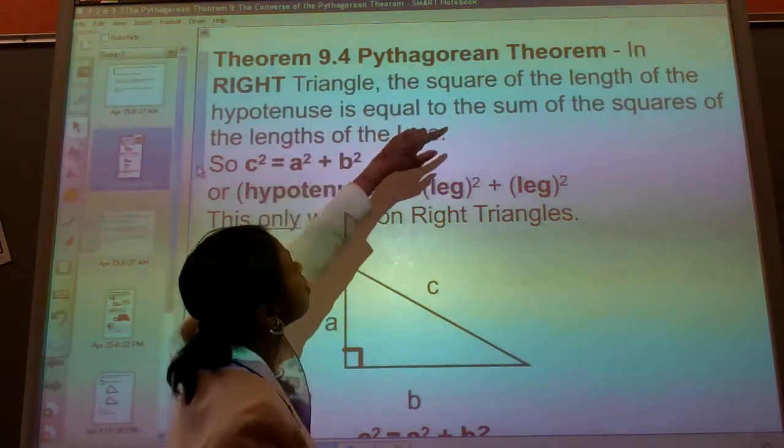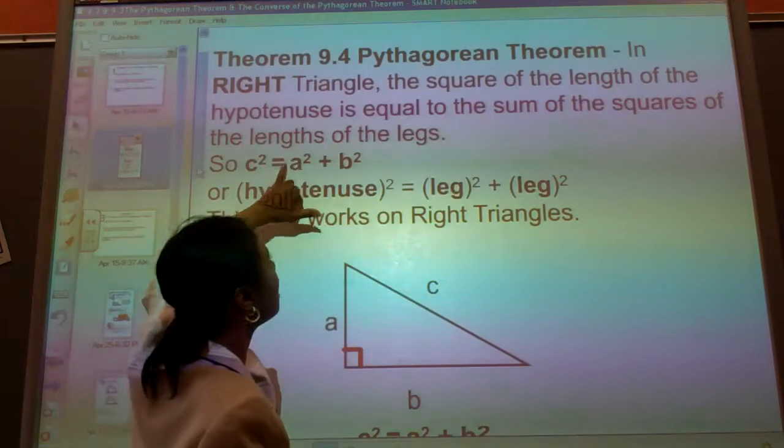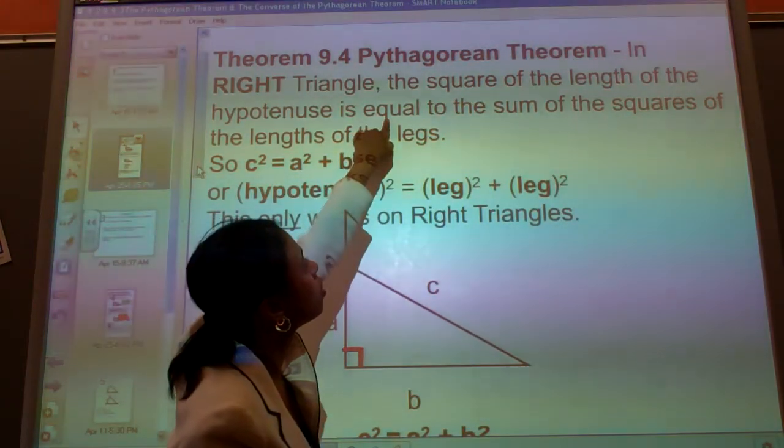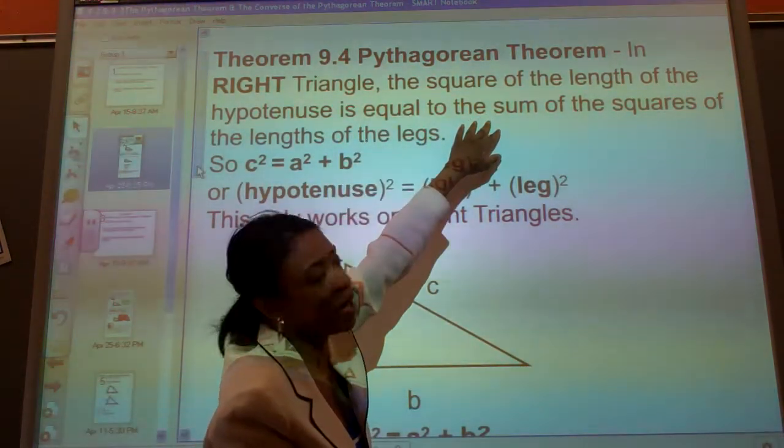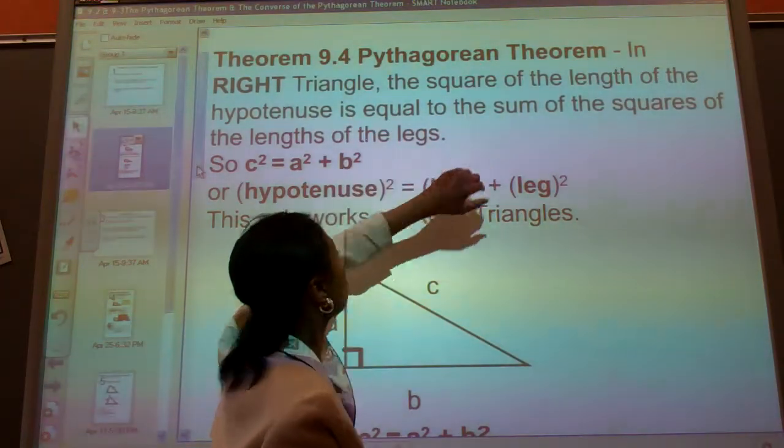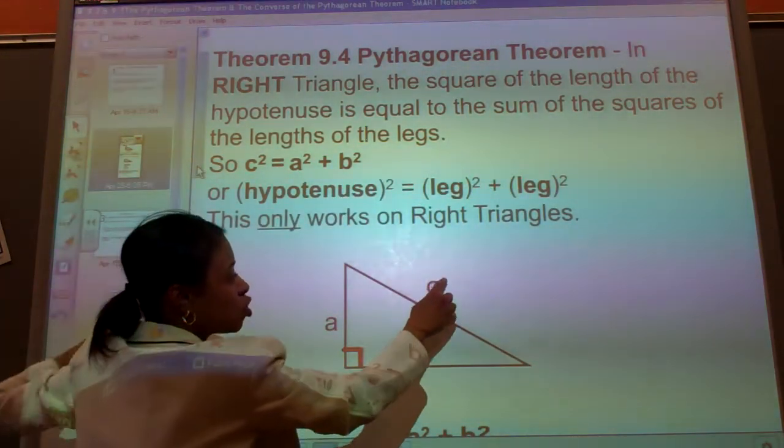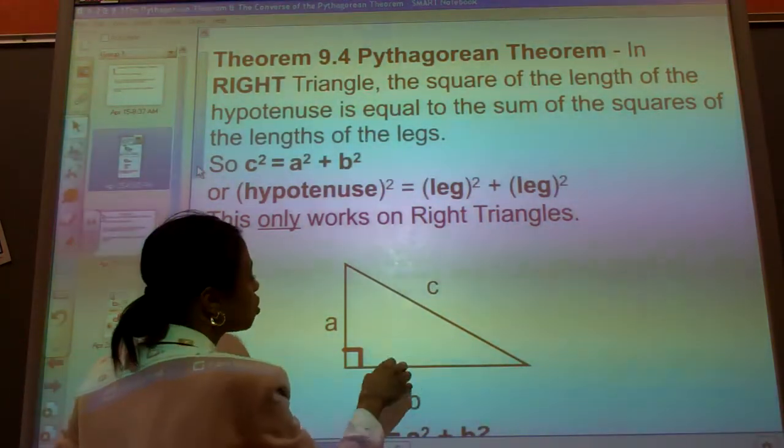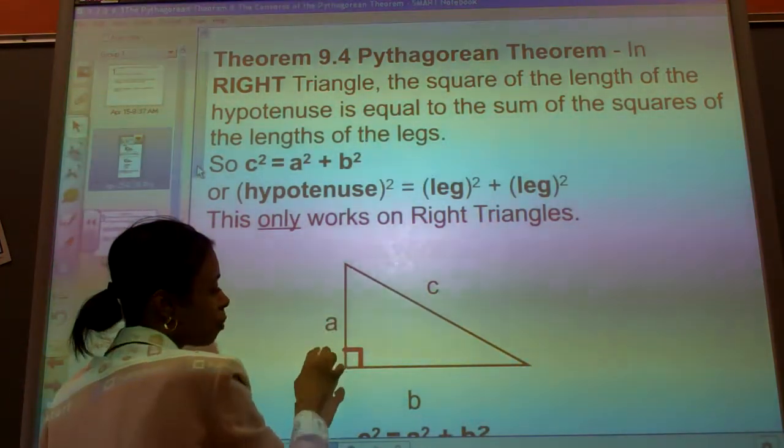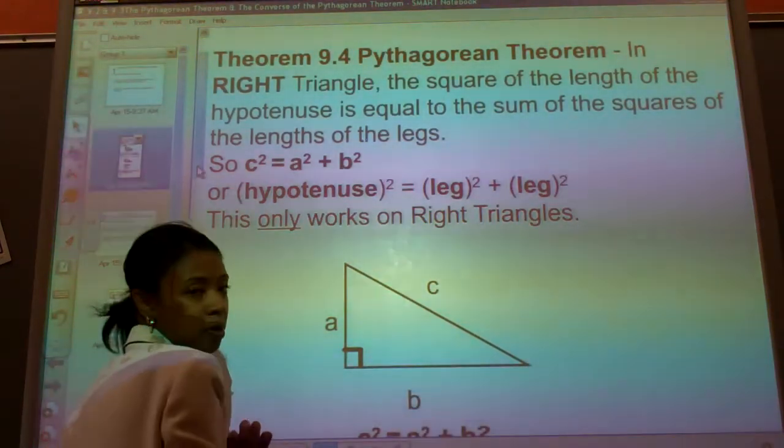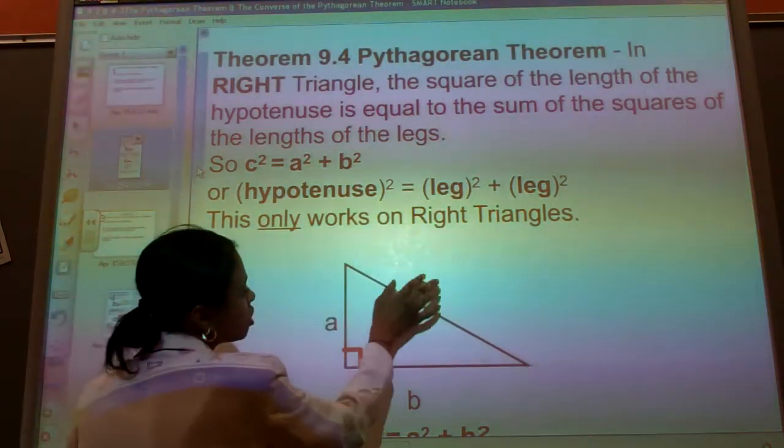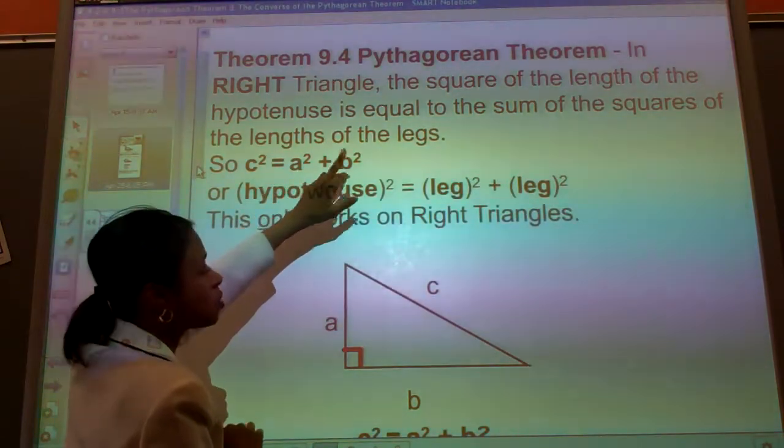And it says that the square of the hypotenuse is going to be equal to the sum, and sum means add, is equal to the sum of the squares of the lengths of the other two legs. So C squared is equal to A squared plus B squared.